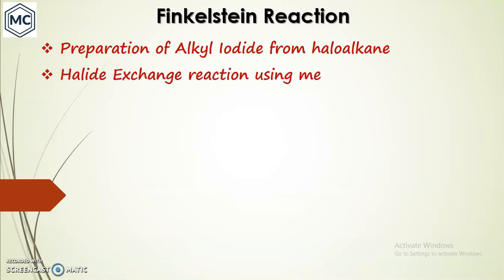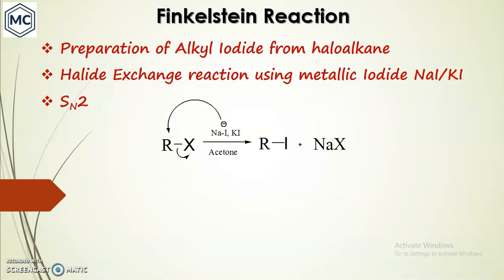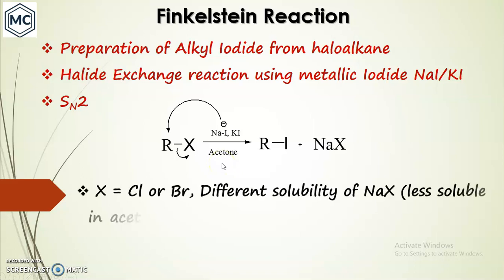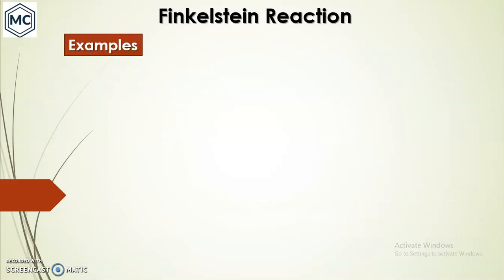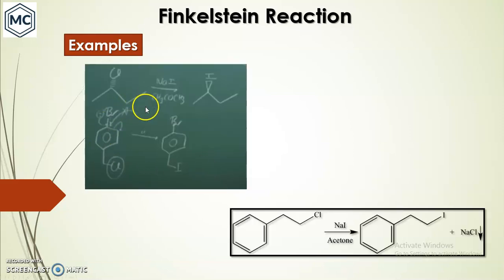Next is the Finkelstein reaction. This is the iodination method to prepare iodoalkane from haloalkane via halide exchange using metallic iodide - here we use sodium iodide or potassium iodide. It is also an SN2 reaction. Here dry acetone is used, which plays an important role because the byproduct sodium halide - sodium chloride or sodium bromide - is insoluble in acetone, forming a precipitate, while sodium iodide or potassium iodide is soluble in acetone. This difference in solubility shifts the equilibrium to the right.